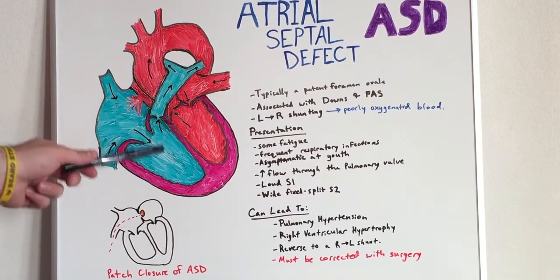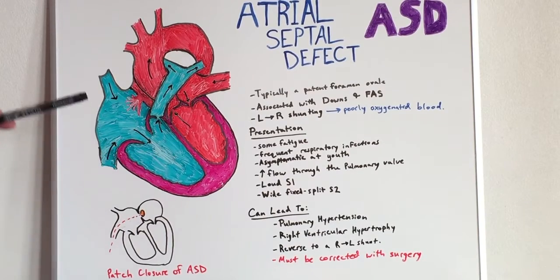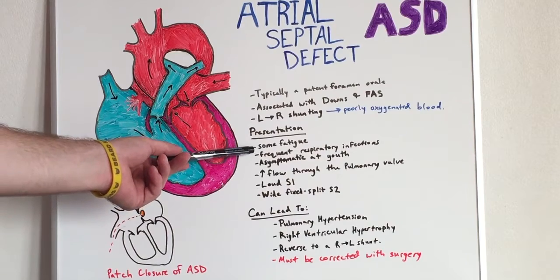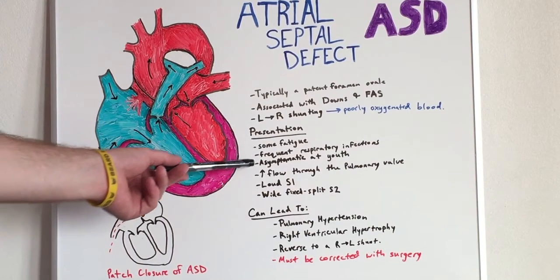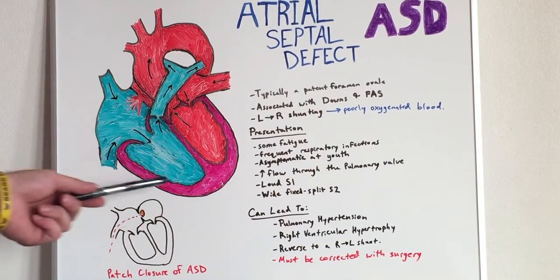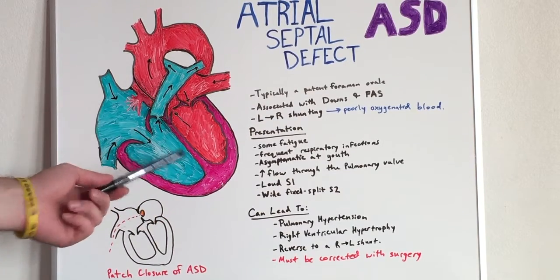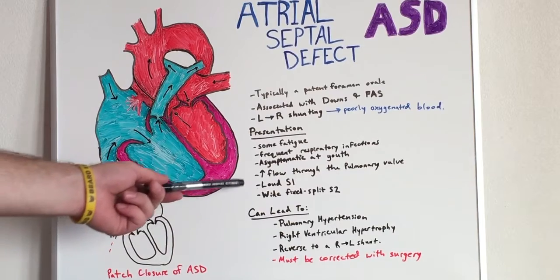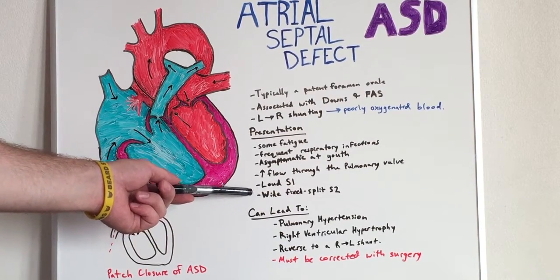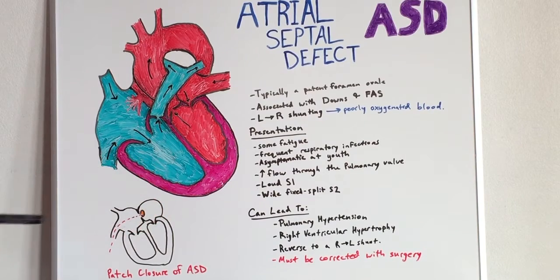Some typical clinical presentations include fatigue and frequent respiratory infections. Children may be asymptomatic in youth. There is increased blood flow through the pulmonary valve. Upon auscultation, you will hear a loud S1 sound and a wide fixed split S2 sound.